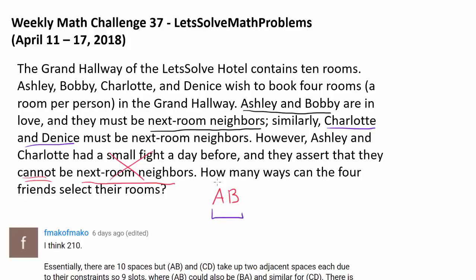We want Ashley and Bobby to be next to each other, so let's consider them as one entity. Let's say AB or BA is entity X, and we have C and D, which make up couple Y. We want to arrange X and Y. Since we are using four rooms for X and Y, we have six rooms left.